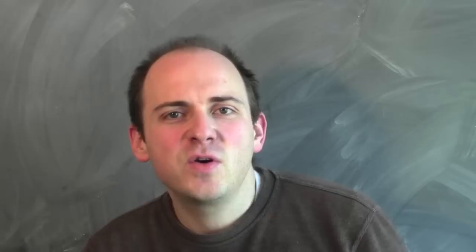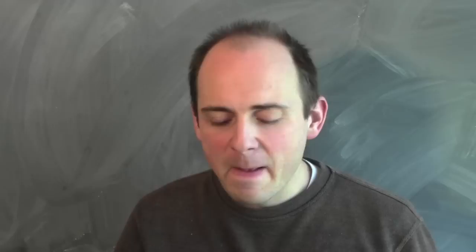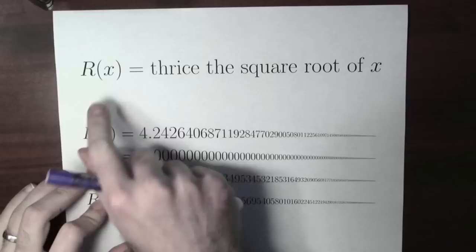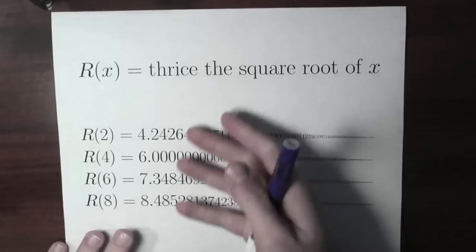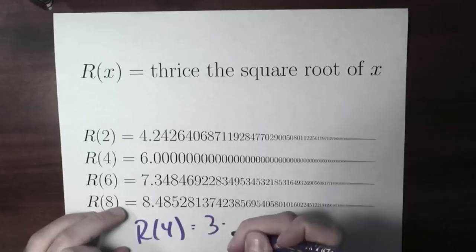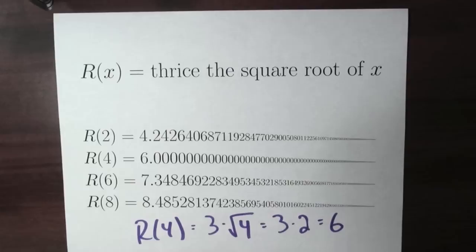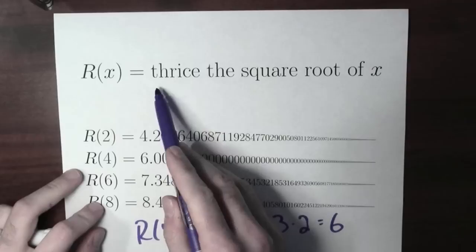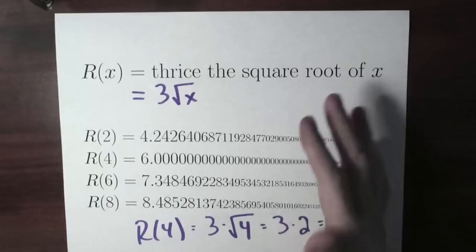We've seen how you can write down a function using a rule involving mathematical symbols, like x squared plus x. You can also write down a function just using English words. For example, I'll define r of x to be thrice — that means 3 times — the square root of x. The function at 4 is 6, because r of 4 is 3 times the square root of 4, which is 3 times 2, which is 6. The point is that you can define a function just by writing down what the function is supposed to do using English words.